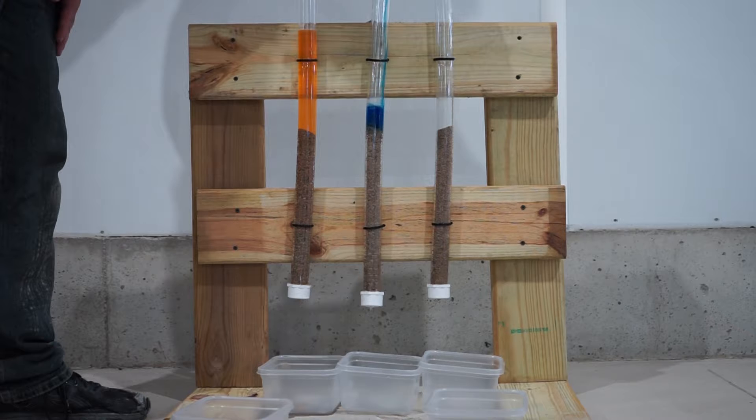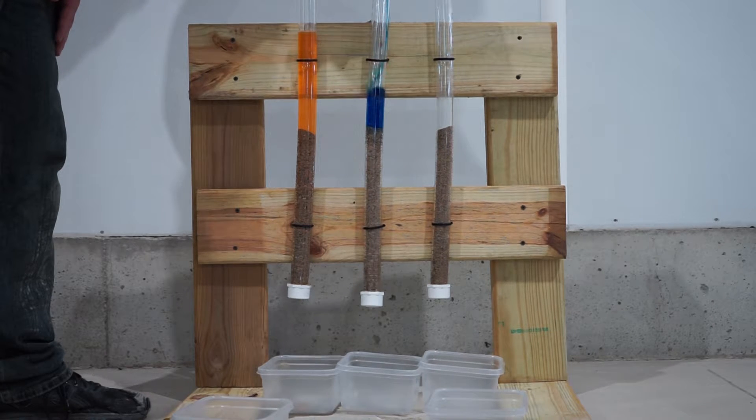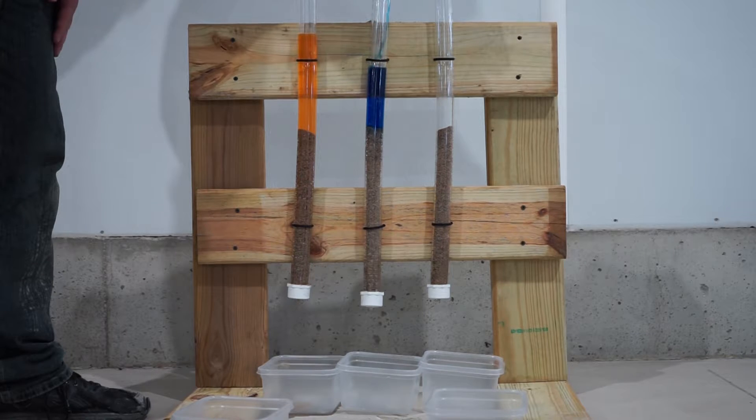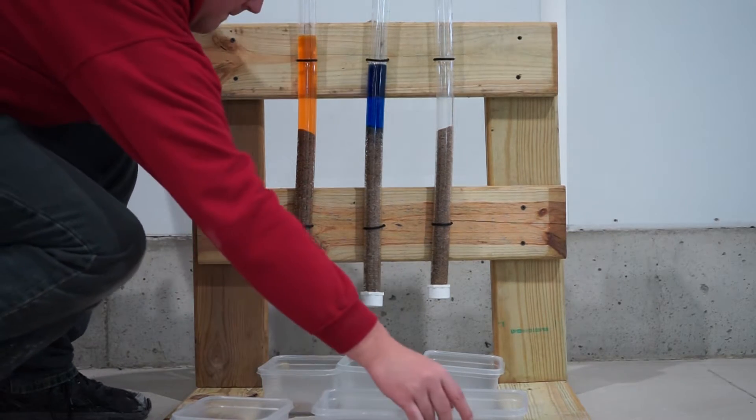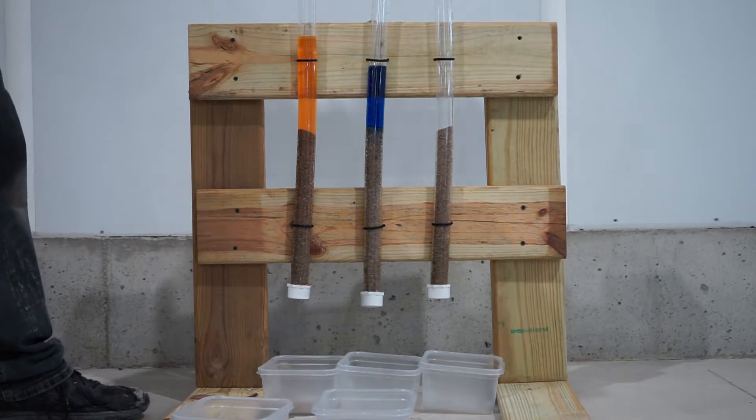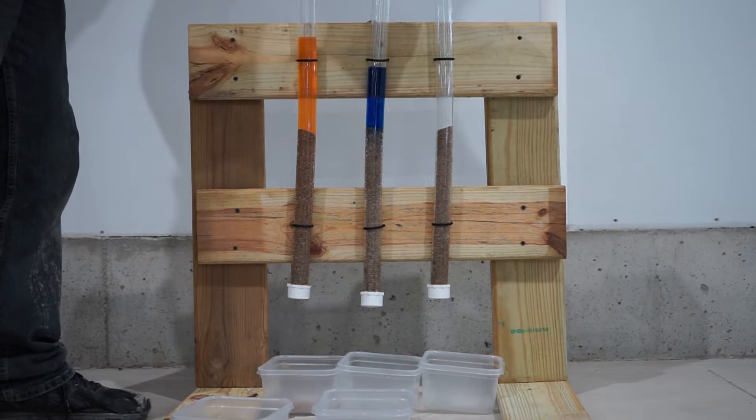We also have three different tubes of water. On the far left, we have orange, which is a negatively charged dye. In the middle, we have blue, which is a positively charged dye. And on the right, we've combined the orange and the blue, so there's positively and negatively charged dye within that tube itself.